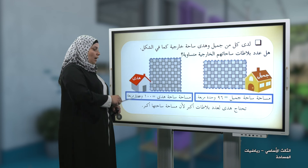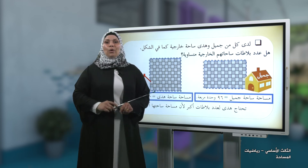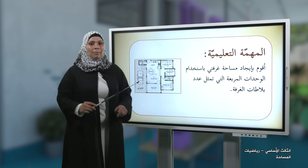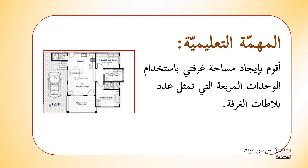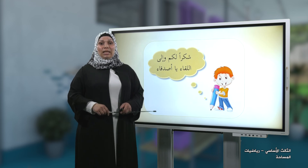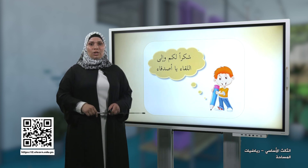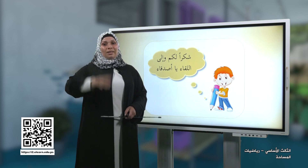لاحظوا: مساحة ساحة هدى 100 ومساحة ساحة جميل 96. في نهاية لقائنا، مهمتنا التعليمية من داخل المنزل: أقوم بإيجاد مساحة غرفتي باستخدام الوحدات المربعة، التي تمثل البلاط الموجود على أرض الغرفة. نقوم بعد البلاطات التي تغطي أرض الغرفة ونحصل على مساحتها. بإمكانكم مشاهدة الموقف التعليمي عبر الكود أو الرابط أسفل الشاشة. دمتم بخير وعافية وإلى اللقاء يا أصدقاء.